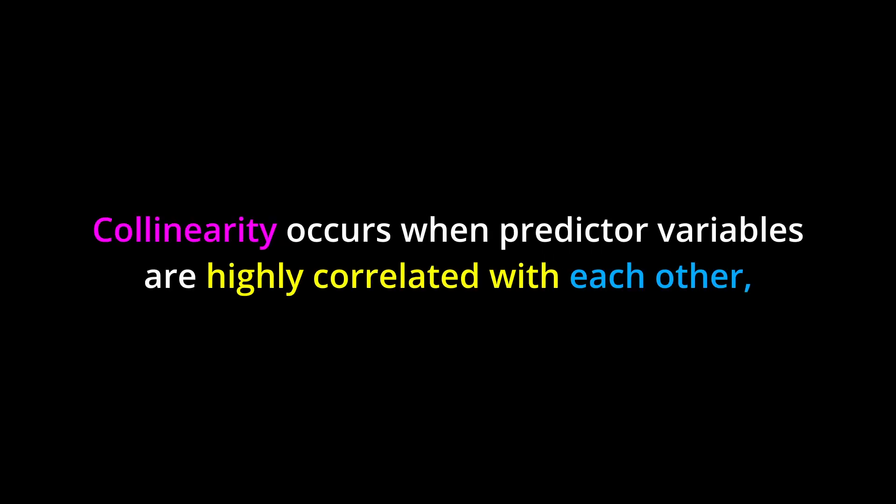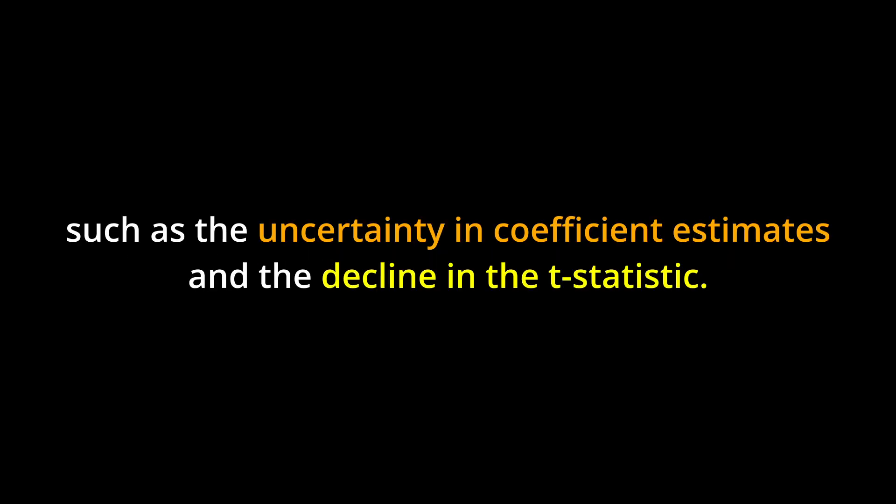In this chapter we also learned about the potential challenges of collinearity in the regression context. Collinearity occurs when predictor variables are highly correlated with each other, making it difficult to separate their individual effects on the response variable. We explored the consequences of collinearity, such as uncertainty in coefficient estimates and the decline in the t-statistic.